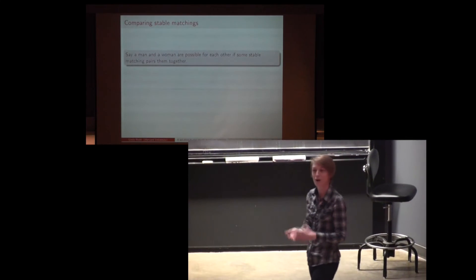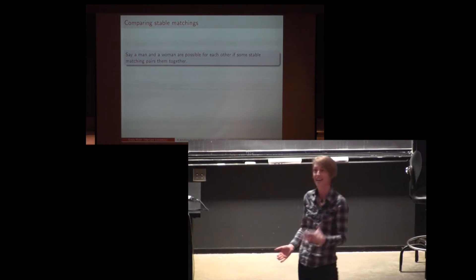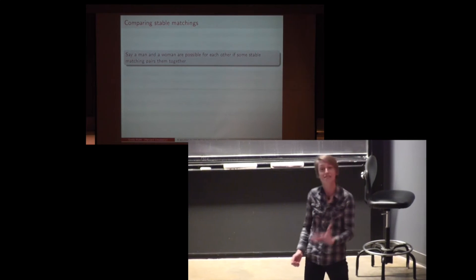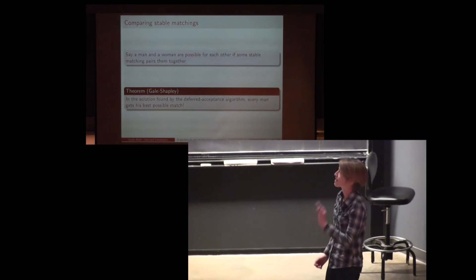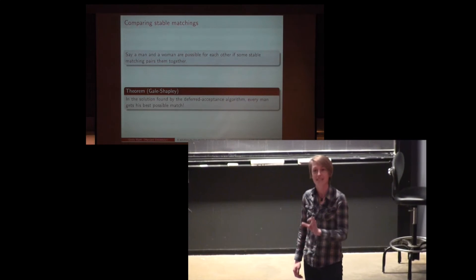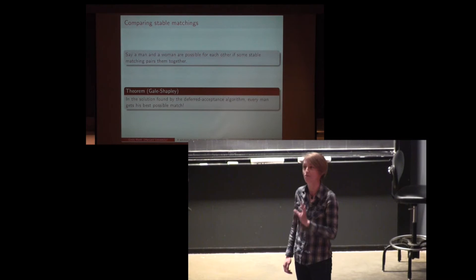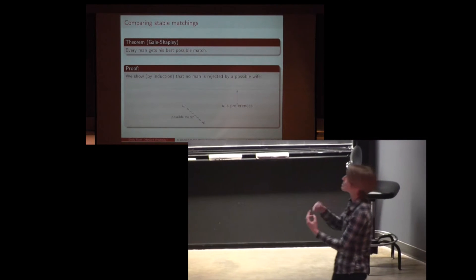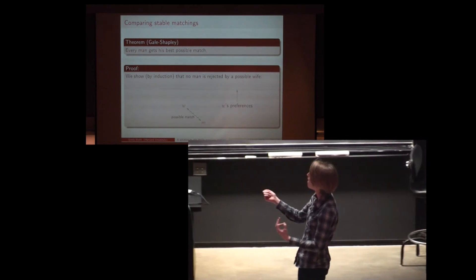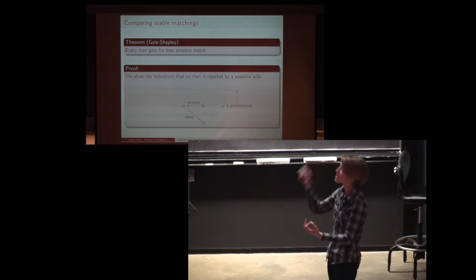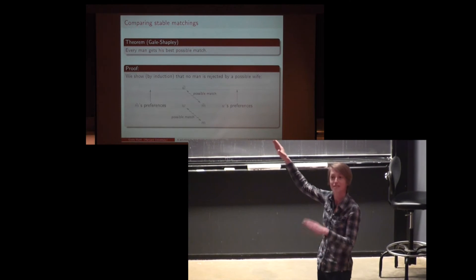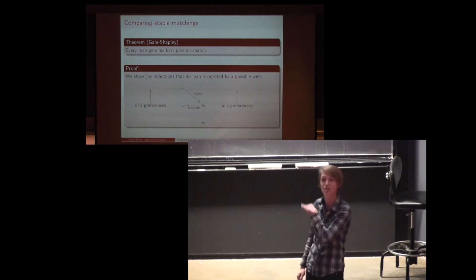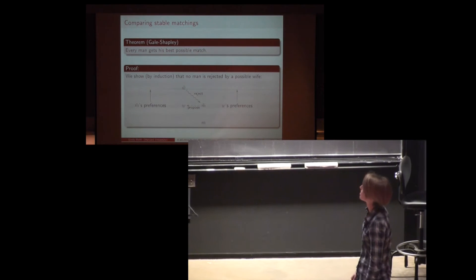Now that we know the stable marriage problem can be solved, we might imagine there are multiple solutions and ask how they compare. We'll say that men and women are possible for each other if there's some stable matching that marries them. The remarkable thing is the solution found by the Gale-Shapley algorithm is not only stable but simultaneously optimizes the result for every man — every man gets his best possible match. Proof by induction: suppose M is the first man rejected by a possible wife W. The rejection only happens if she receives a proposal from a man M-tilde she prefers. But then stability of the matching pairing M and W means M-tilde has a preferred impossible wife who would have rejected him on a previous day — a contradiction.